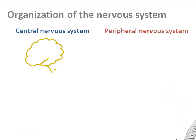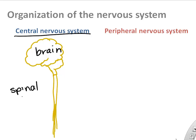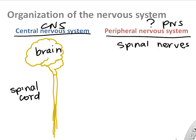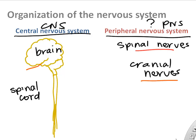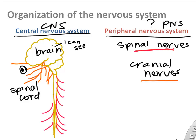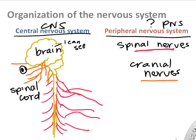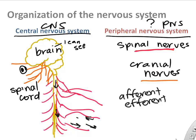If we organize the nervous system, we divide things into the central nervous system and the peripheral nervous system. The central nervous system is simply the brain and spinal cord. The peripheral nervous system includes spinal nerves and cranial nerves. Cranial nerves come directly off the brain — to the eyes, mouth, or digestive organs. Spinal nerves come off the spinal cord and create complex peripheral nerves that go to our organs, and these carry both afferent and efferent signals.